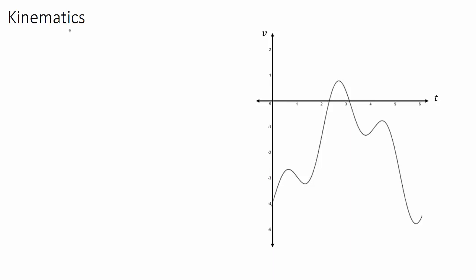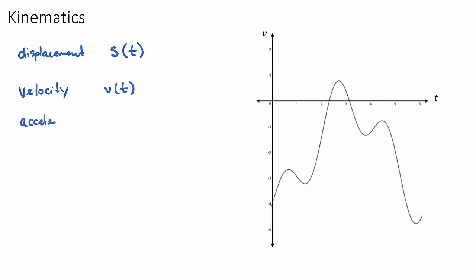The three functions we need to be aware of in kinematics are the displacement function, the velocity function, and the acceleration function. Displacement is expressed as s(t), velocity as v(t), and acceleration as a(t). We really need to understand what displacement means in order to understand what velocity and acceleration mean.